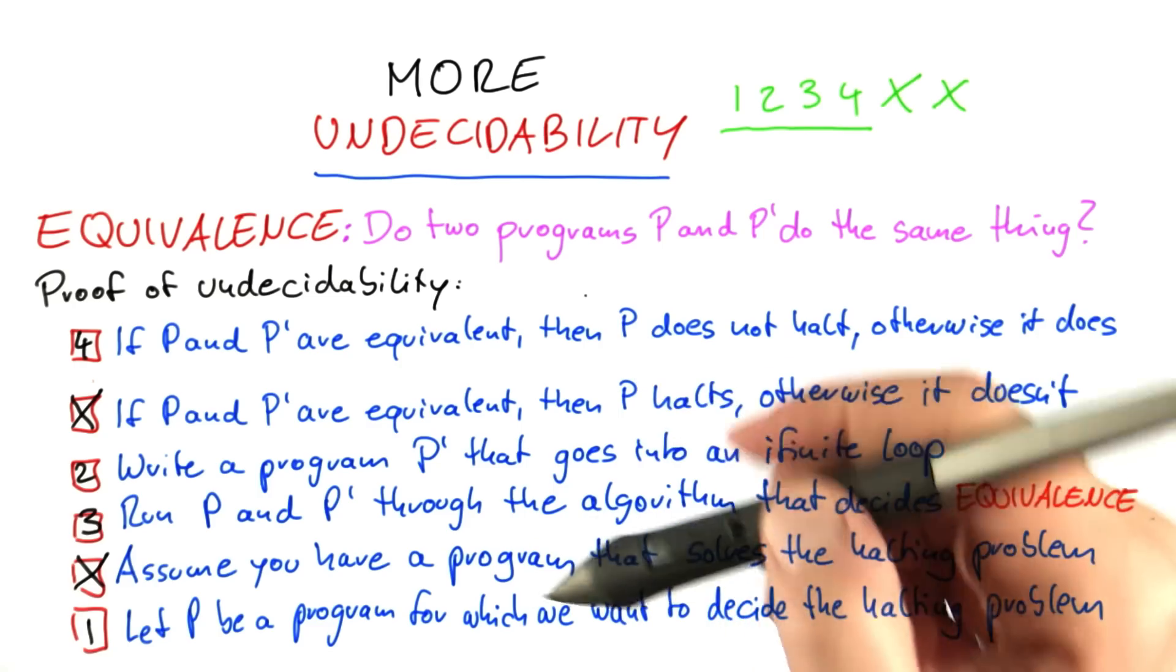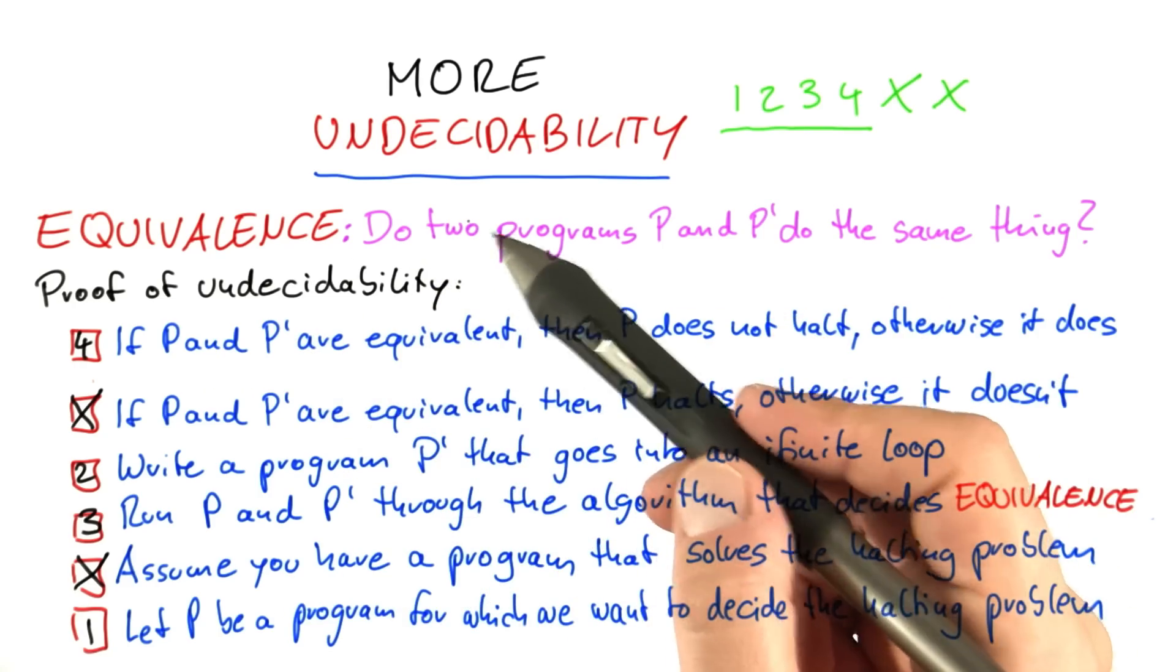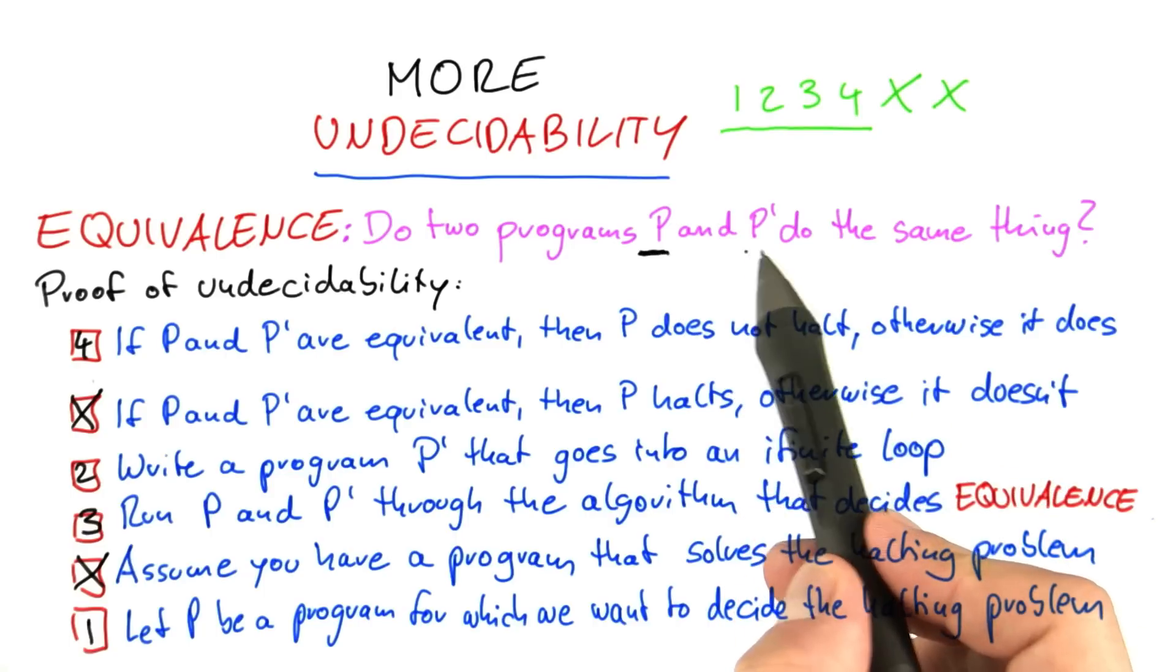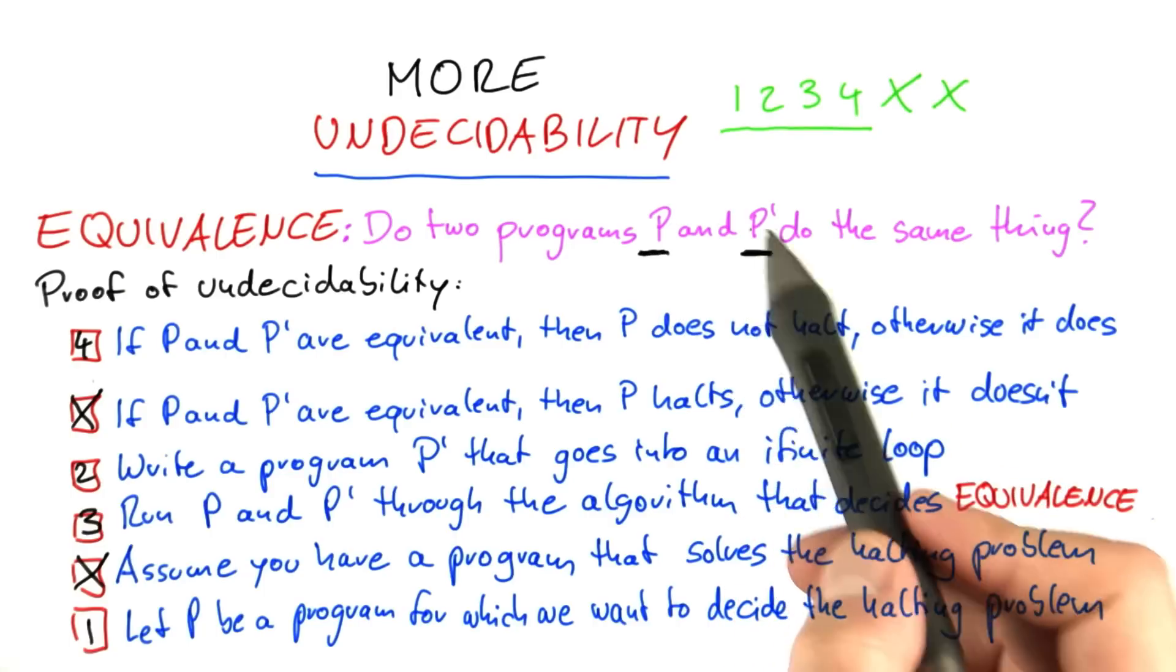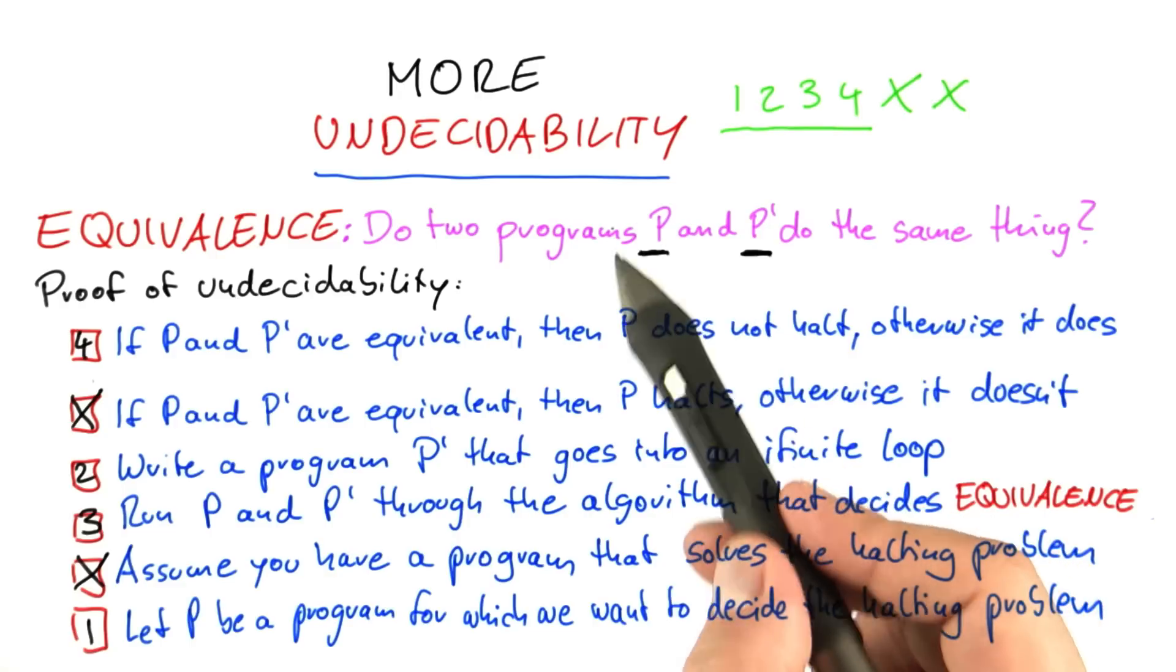because we have now shown that you can use equivalence to solve the halting problem. You just compare any program for which you want to decide the halting problem to a program that always goes into an infinite loop. And if they do the same thing, then they are equivalent. So you know that p will not halt.